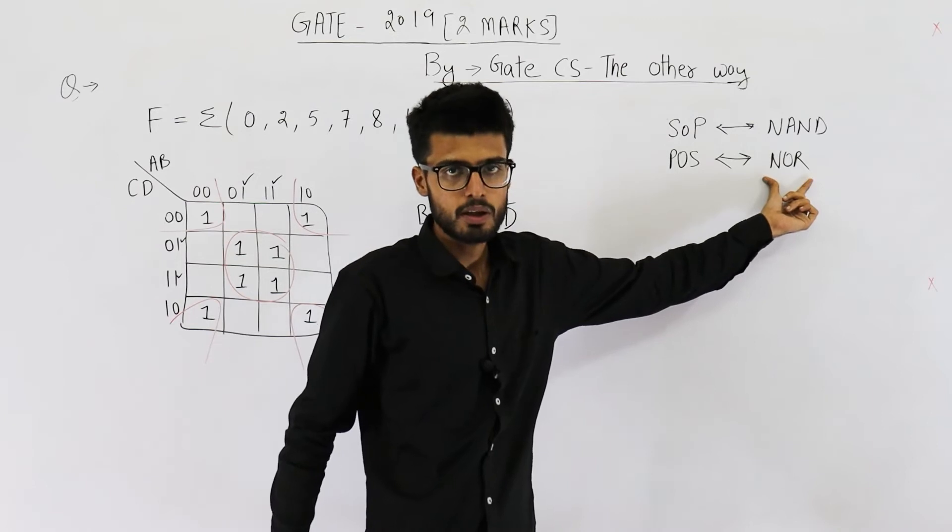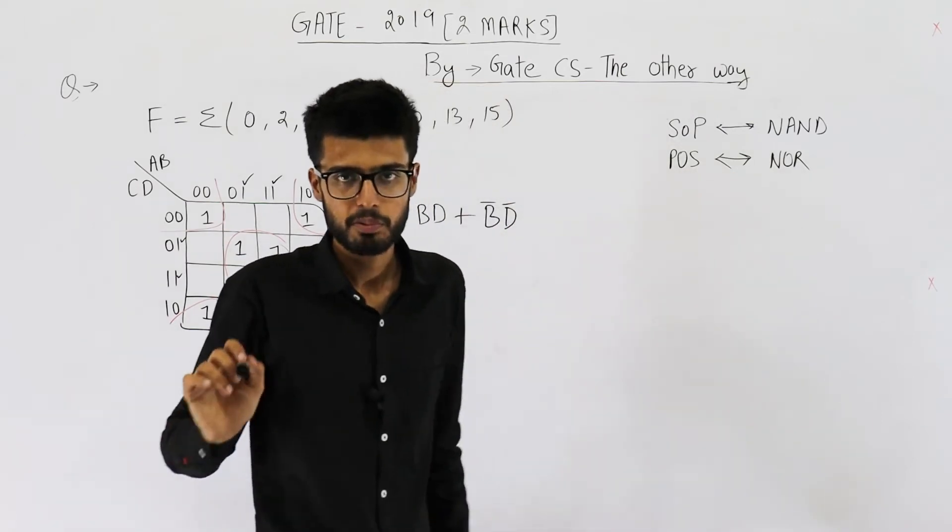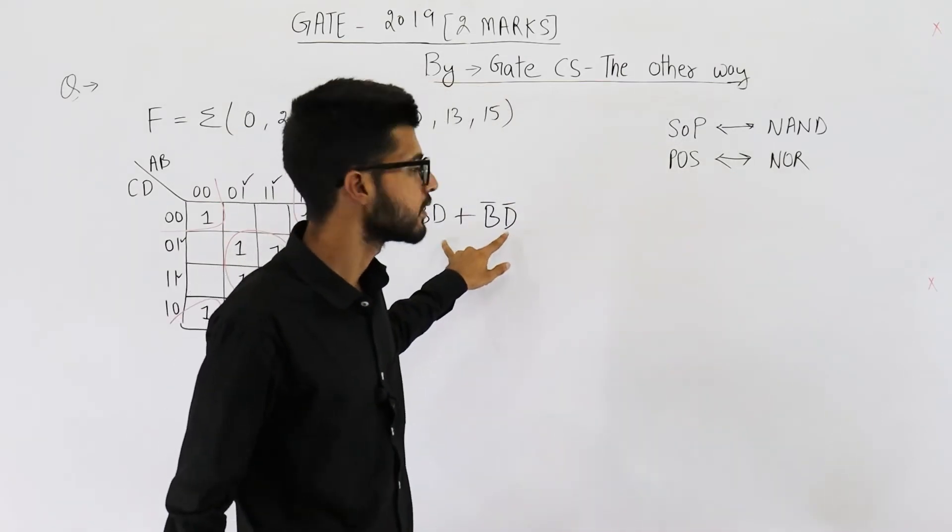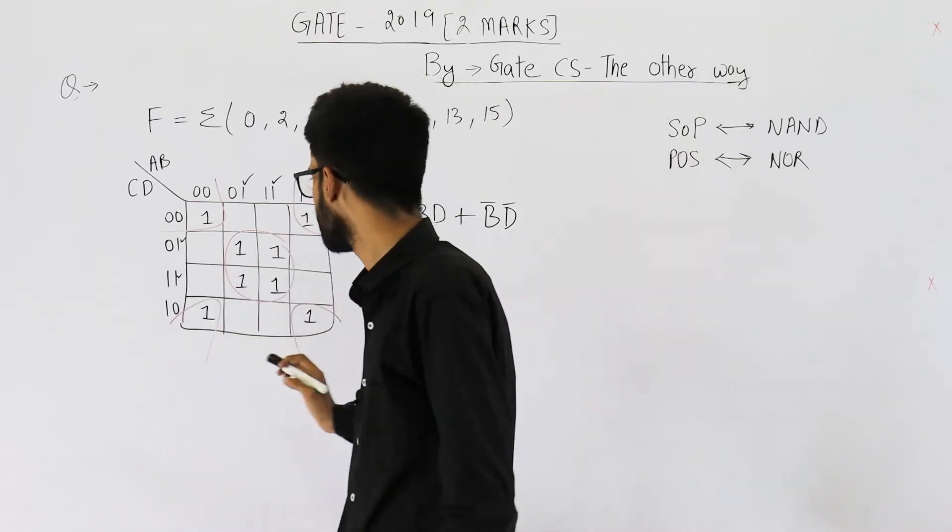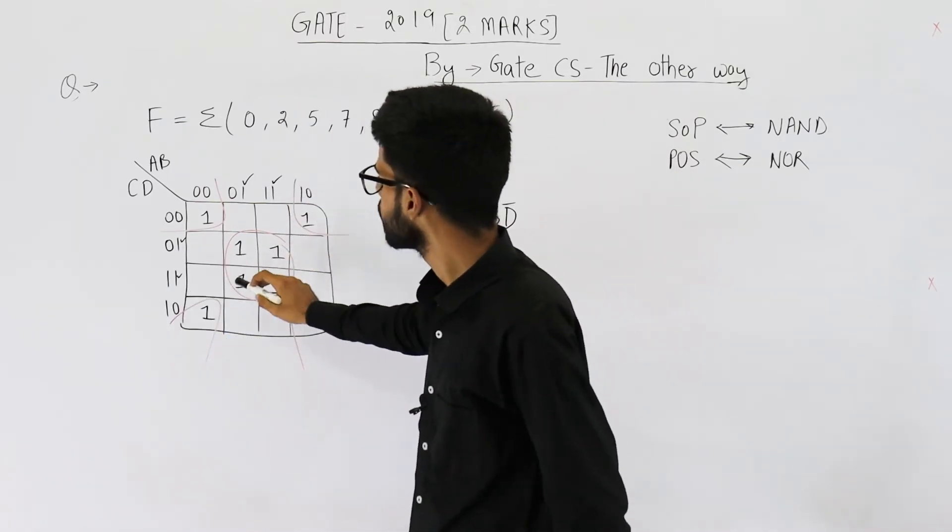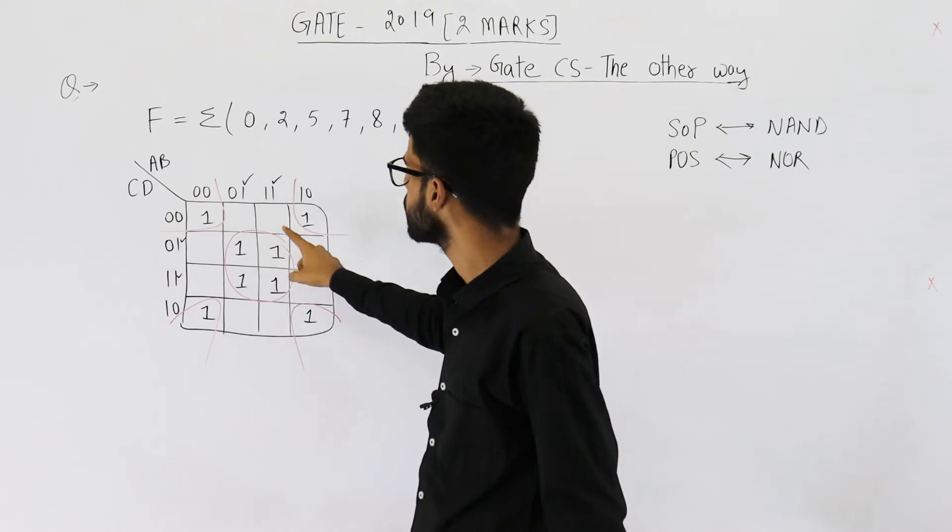For implementing a circuit with NOR gates, POS form is the preferred one. So we require this in POS form. One thing that you could do is you just leave all these ones and mark these zeros.